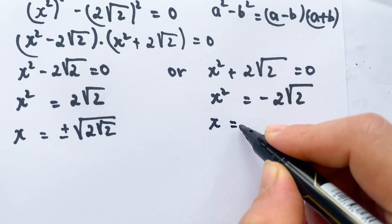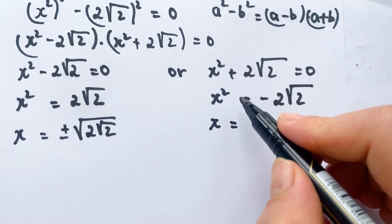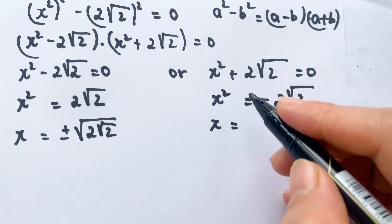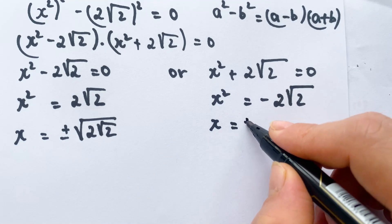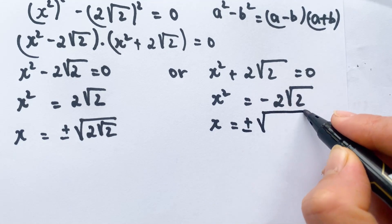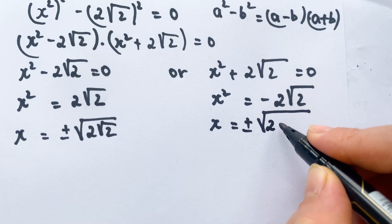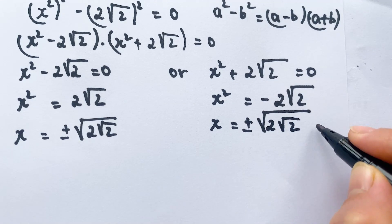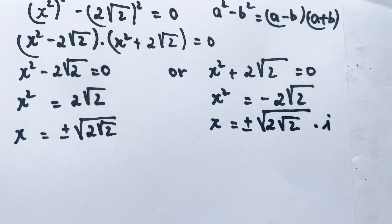For case 2, these are complex numbers: x = ±√(2√2)·i.